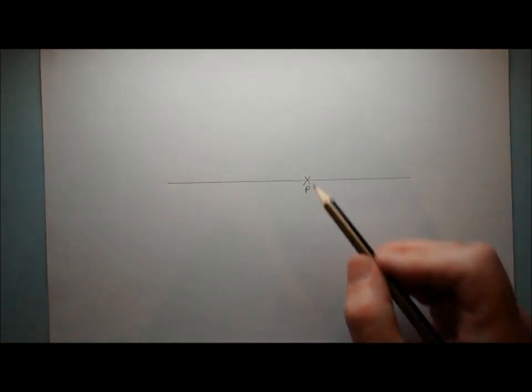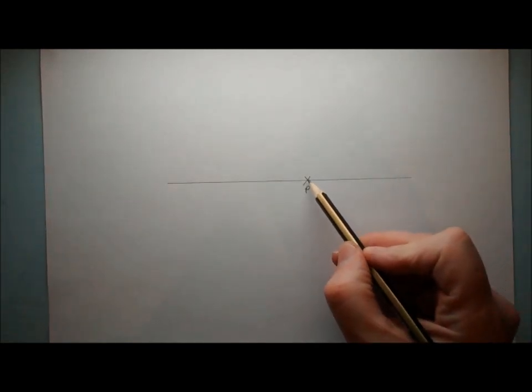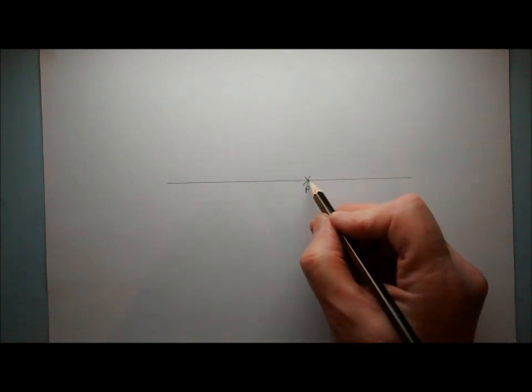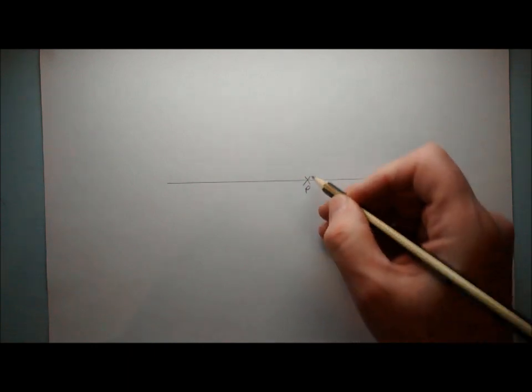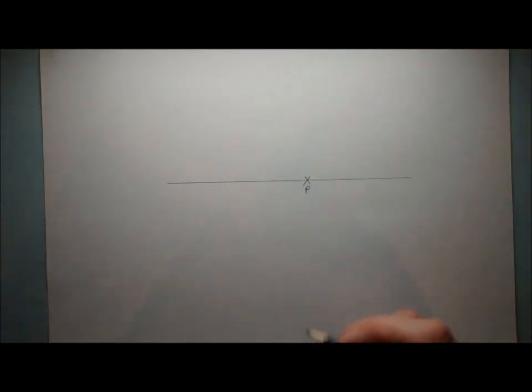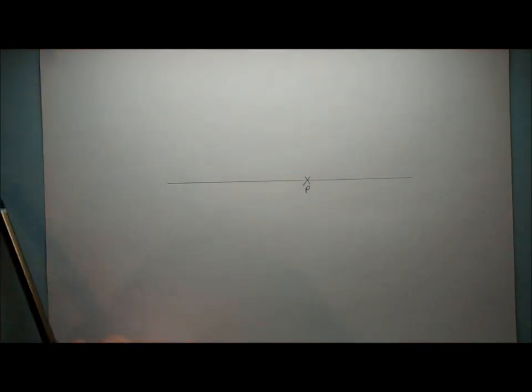This construction is how to construct a perpendicular to a point on a line. It's very similar to some of the other perpendicular constructions we've been doing. What we have to do is draw a line going up at 90 degrees.